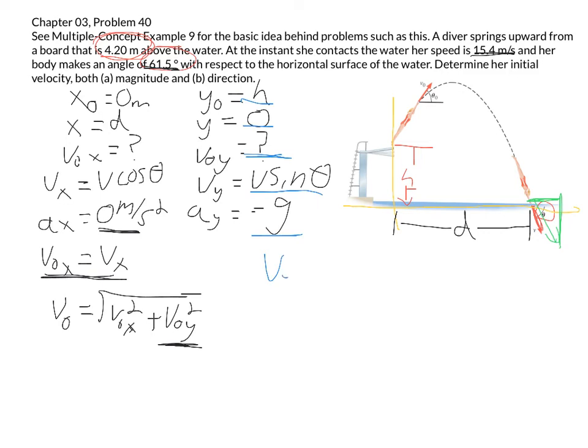v y final squared equals v initial y squared plus 2 times the acceleration times the change in y position.